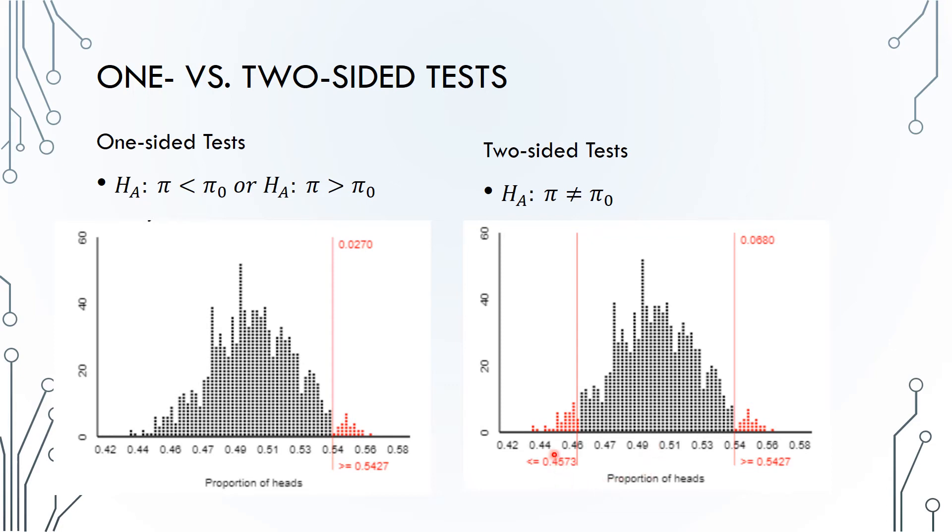Now we need to go the same distance on the other side of the null. 0.5 minus the distance, 0.0427, gives us our starting point, 0.4573. Finally, count the dots in the left tail at or beyond the proportion 0.4573, and add the dots in this tail plus the dots in this tail to get our total p-value of 0.0680. Since we are counting dots in both tails, the p-value must be higher in the two-sided test compared to the one-sided test.